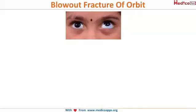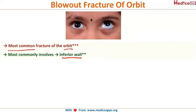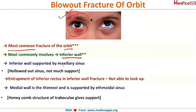The most common fracture of the orbit is the blowout fracture, and it involves the inferior wall. In this image, the girl is trying to look up but the injured eye is not moving upwards — this is due to entrapment of the inferior muscle. There is a fracture to the inferior wall causing entrapment of the muscle, which is not allowing it to move superiorly. The inferior wall is most commonly fractured because it is supported by the maxillary sinus, which is a hollow structure and can be easily broken.